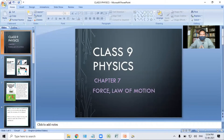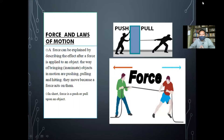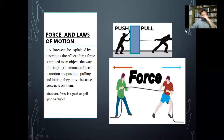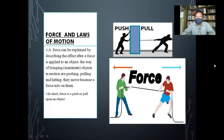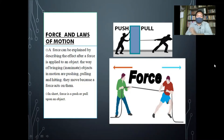What is force? As we have learned before, it is a push or pull of an object. A force can be explained by describing the effect after a force is applied to an object. The ways of bringing an inanimate object into motion are pushing, pulling, and hitting. They move because a force acts on them. So in short, force is a push or pull upon an object.